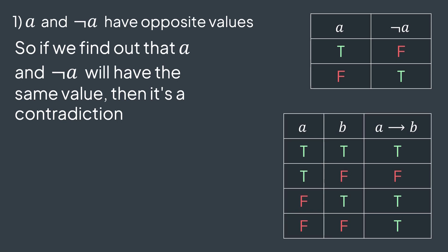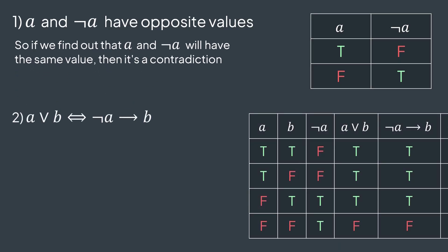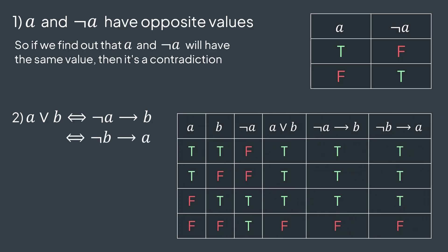Second thing: a implies b means that if a is true, then b has to also be true. And if a is false, b can take any value, true or false. You can see it in this truth table. And a or b is equivalent to NOT a implies b. You can see it in the truth table. It's also equivalent to NOT b implies a. Check the truth table.